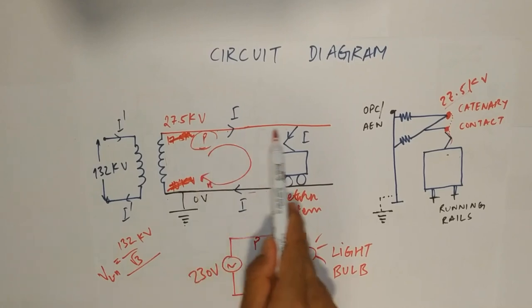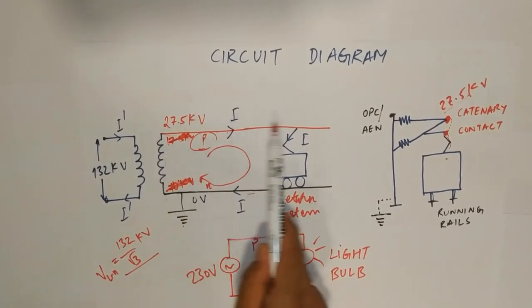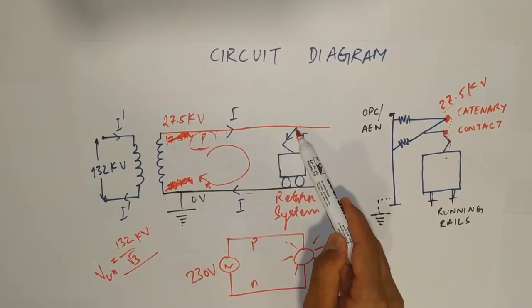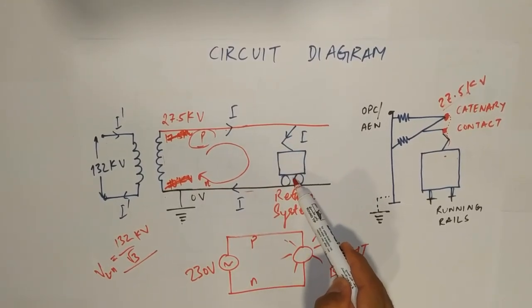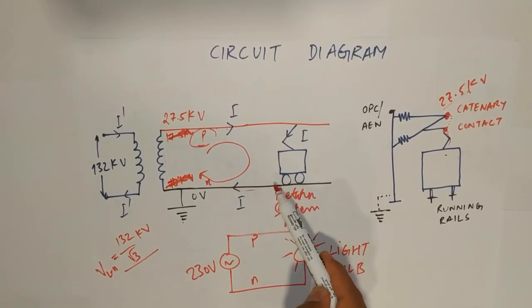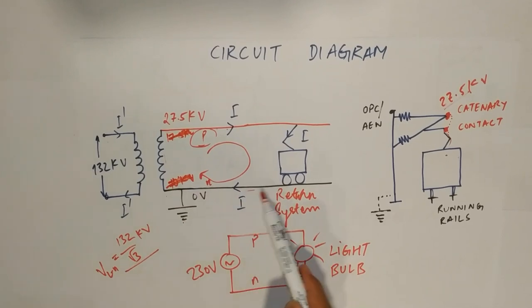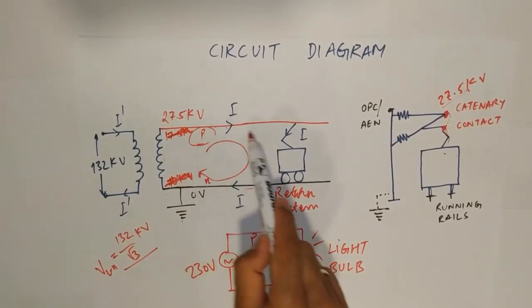So, now you can see that this is your overhead contact system, the red line and the pantograph takes this supply and which enters into the train and then from the wheels via running rails, it gets returned back to its source from where it started. So, this is how your loop is getting completed.